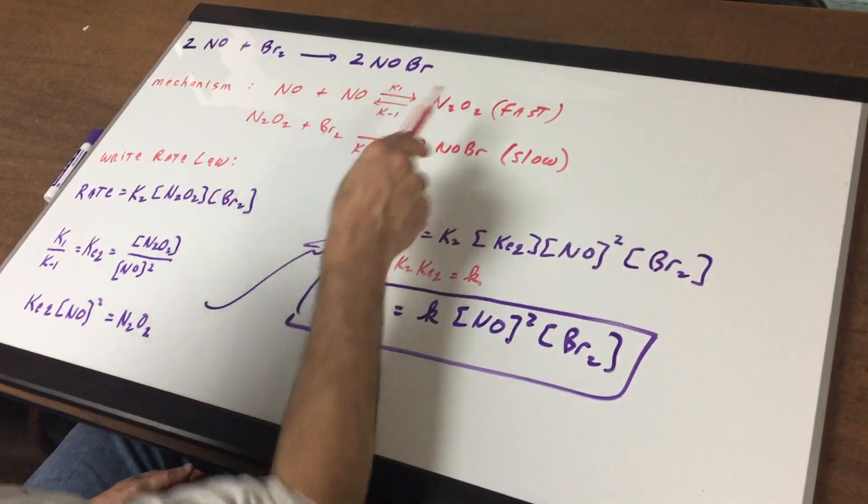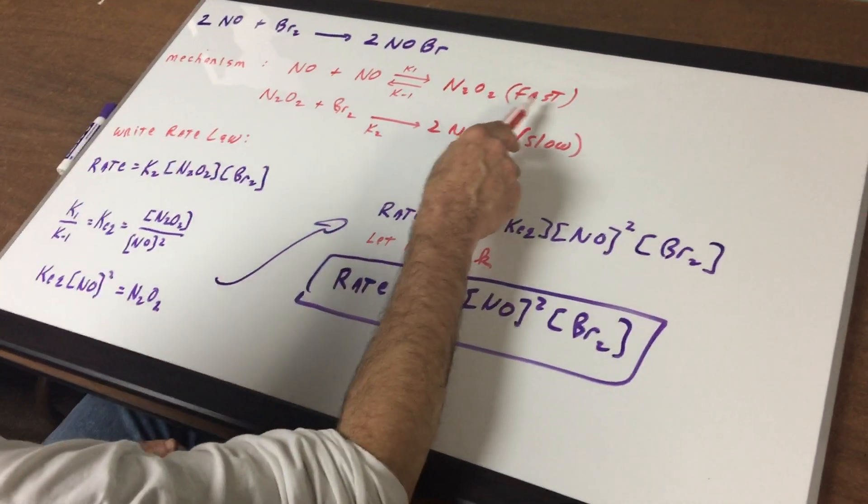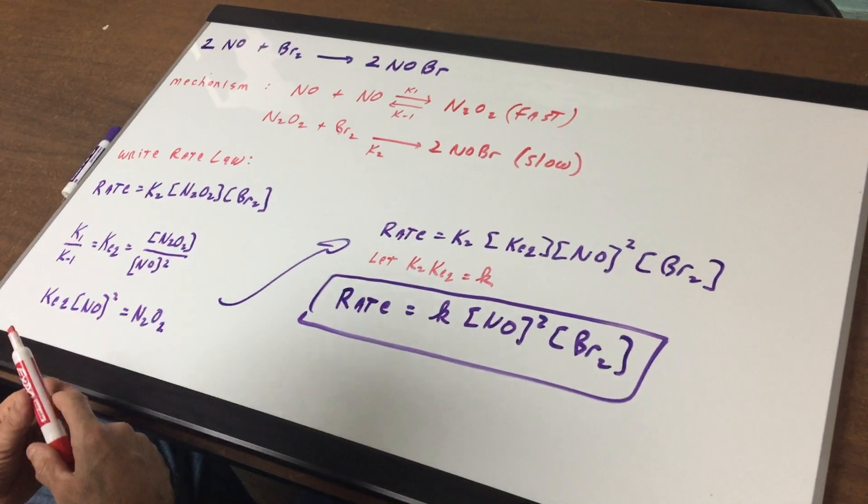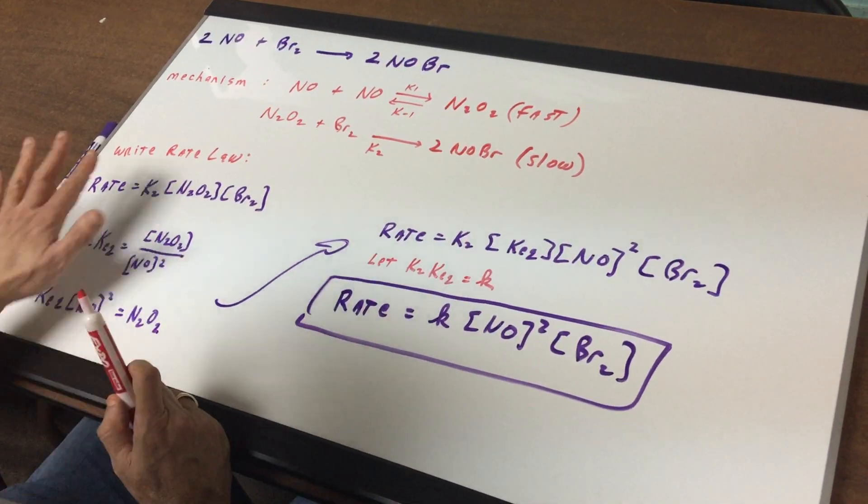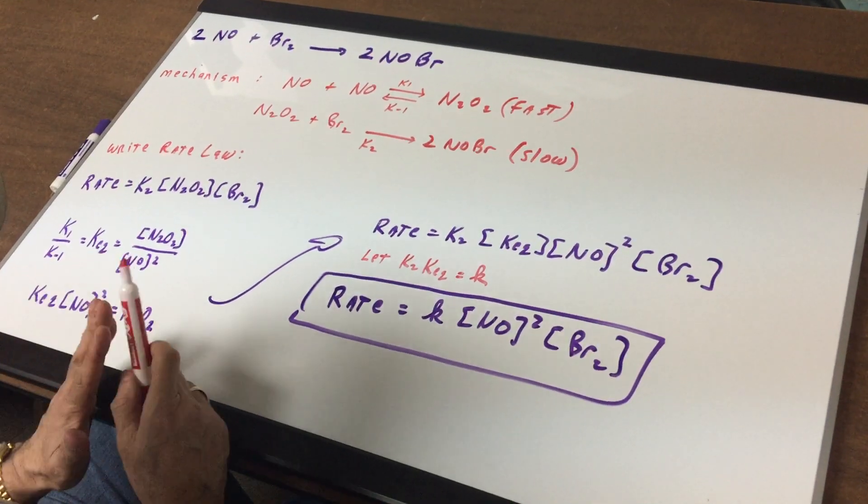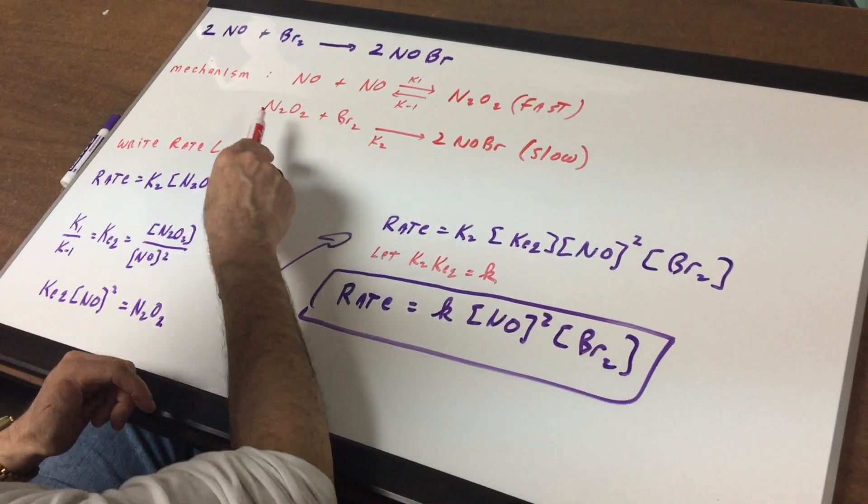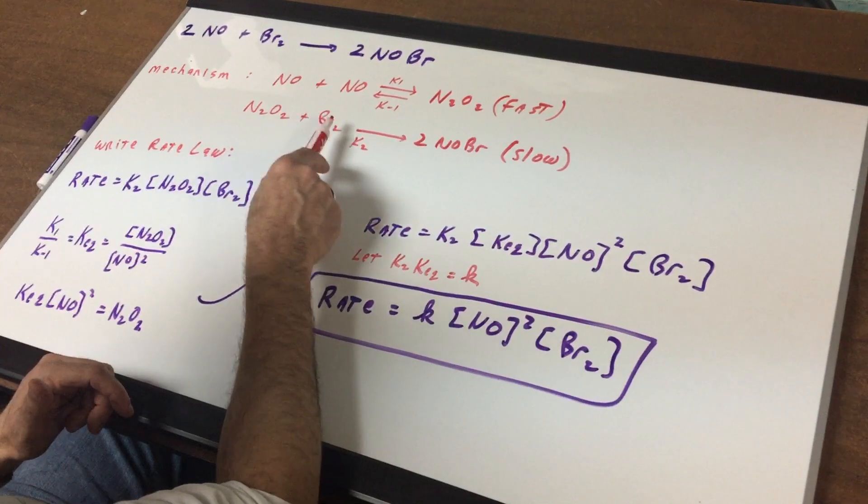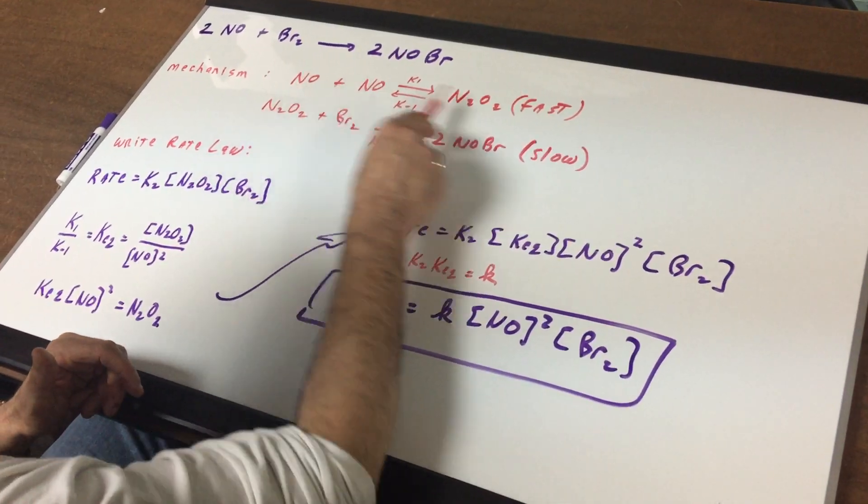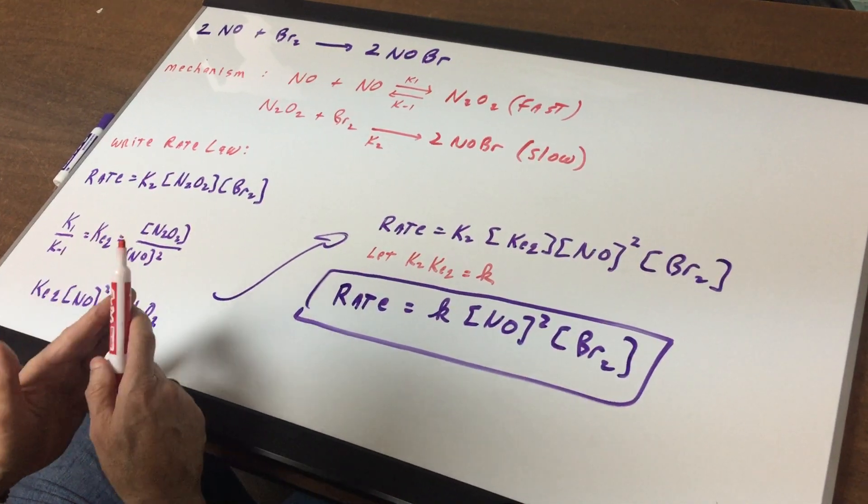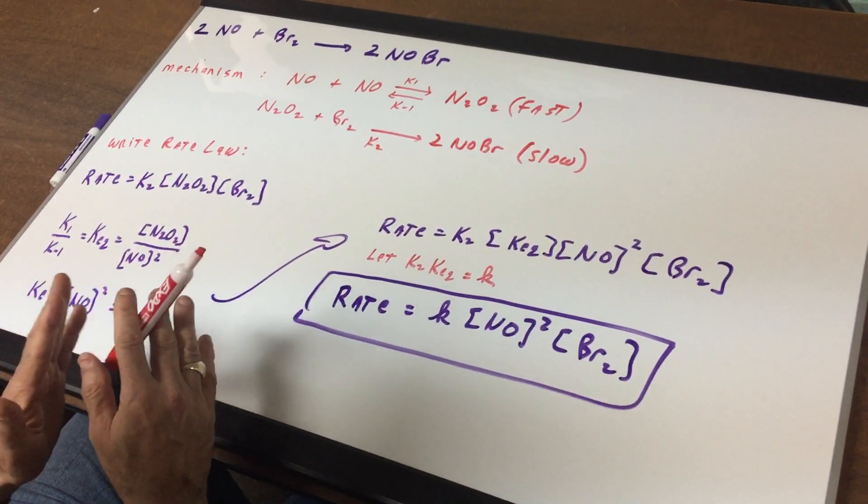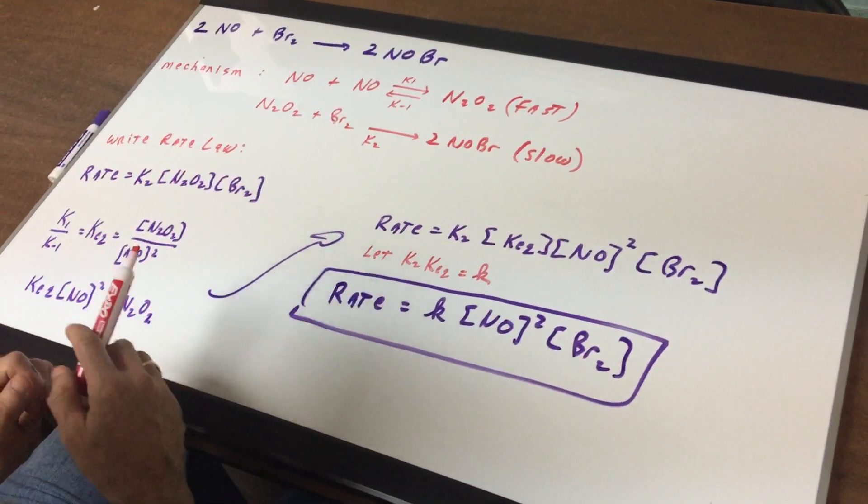And I give you the proposed mechanism. One step is fast and as you can see it's an equilibrium step. The second step is slow. The first thing you do to write the rate law is you go to the slow step and you write the rate law for the slow step. These steps of a mechanism are called the elementary steps, and you could write a rate law for an elementary step directly from the reaction itself.